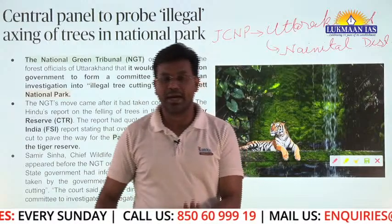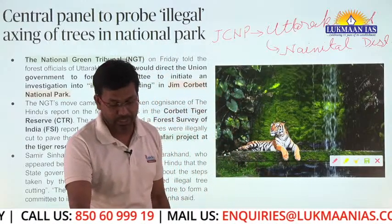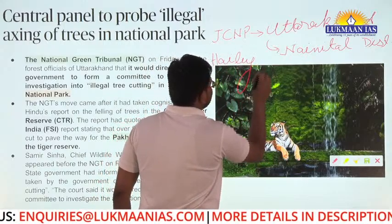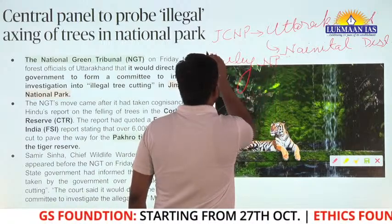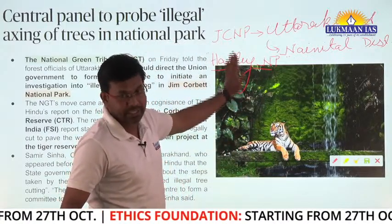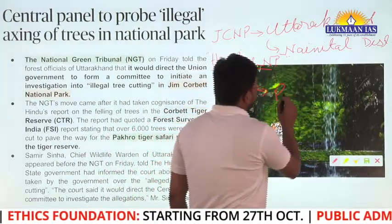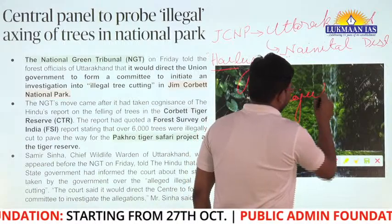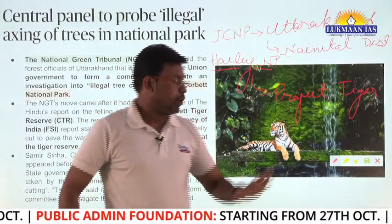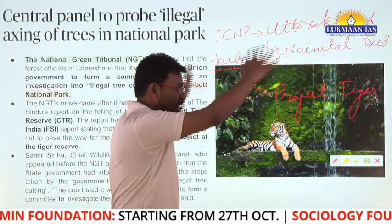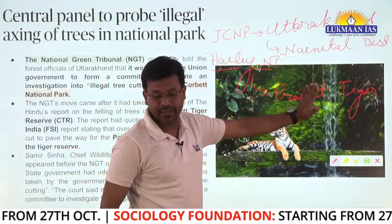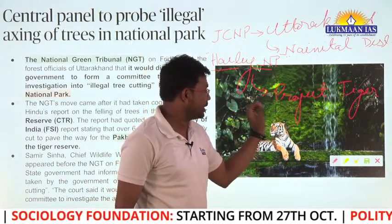Jim Corbett National Park is the first national park to be established in India. It was initially established as Hailey National Park in 1936. It is part of the larger Corbett Tiger Reserve. Project Tiger was initiated here in 1973.